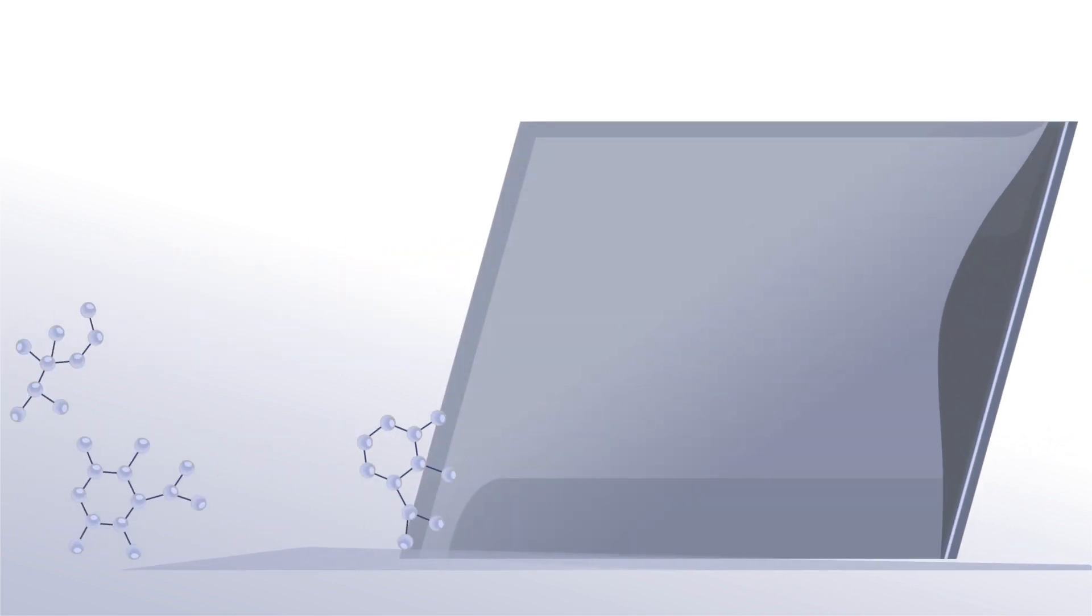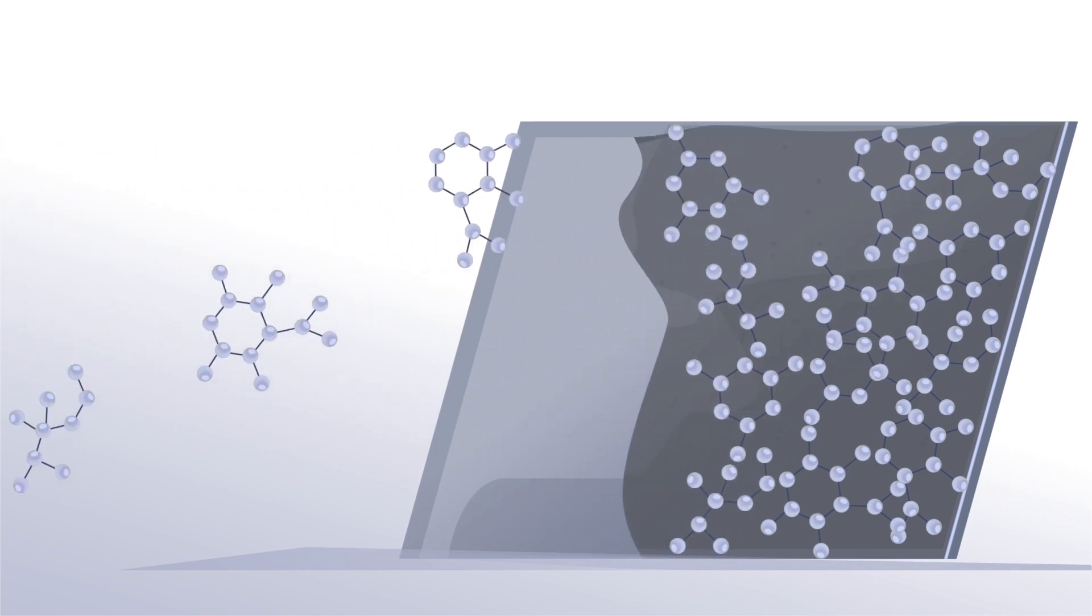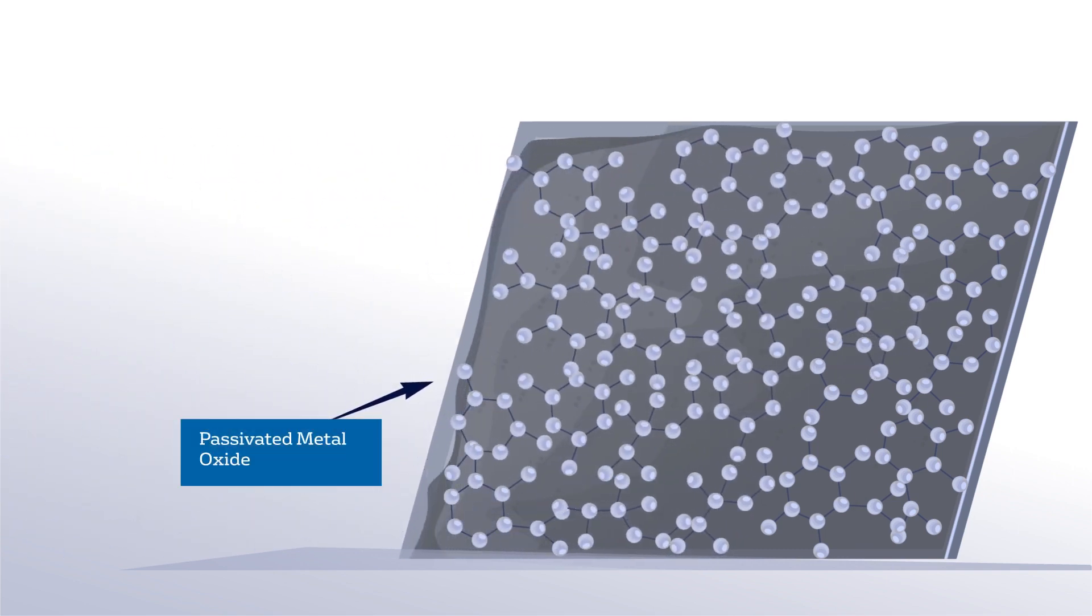When Ecofilm is introduced to the system, it begins templating the mild steel surfaces for film formation. This, in turn, begins to promote the formation of a passivated metal oxide layer on the surface.